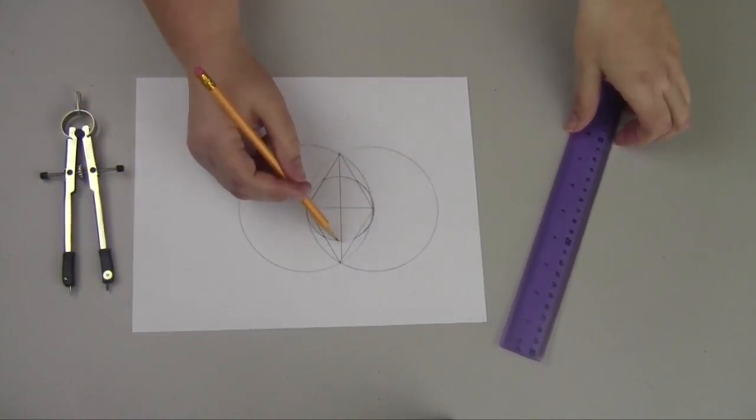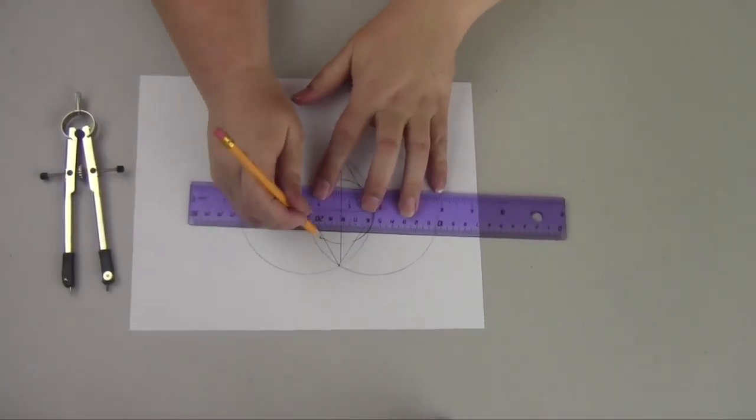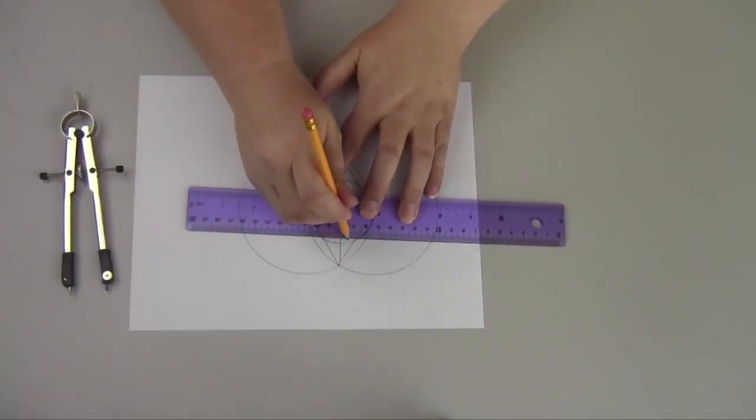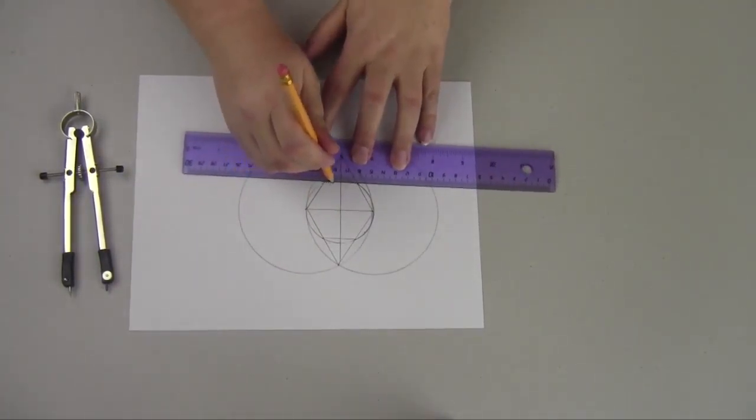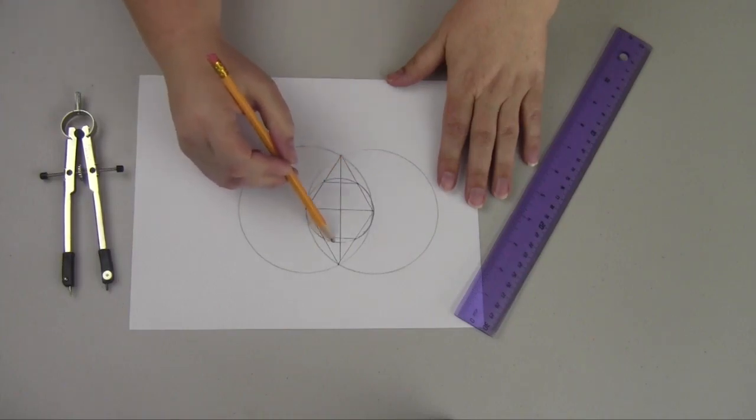These points are already connected for you, so now you're going to just connect the top two and the bottom two, and you have your hexagon inside of that circle.